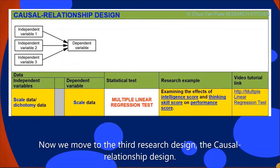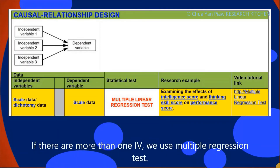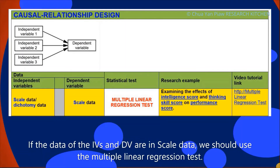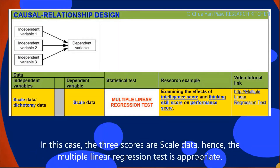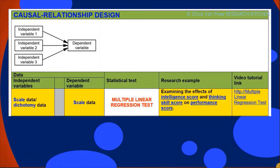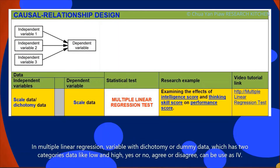Now we move to the third research design: the causal relationship design. If there is more than one IV, we use the multiple regression test. If the data of the IVs and DVs are scale data, we should use the multiple linear regression test. For example, the multiple linear regression test is used to analyze the effect of intelligence score and thinking skill score on performance score. In multiple linear regression, variables with dichotomous or dummy data — which have two categories such as low and high, yes or no, or agree or disagree — can be used as an IV.